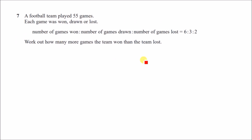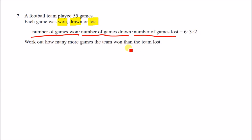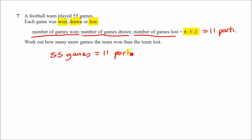Number seven: a football team played 55 games. The ratio of games won to drawn to lost is 6:3:2. Add up all ratio parts: 6 plus 3 plus 2 equals 11 parts, which must equal 55 games. To find one part, divide 55 by 11, giving 5 games per part.